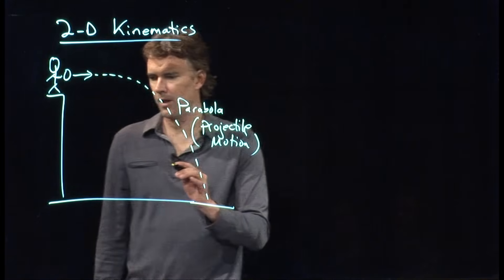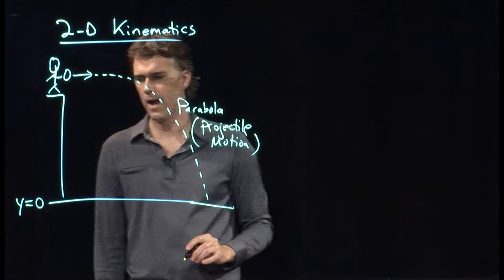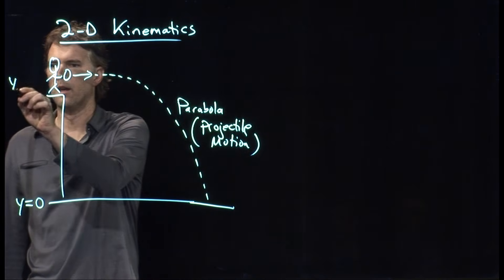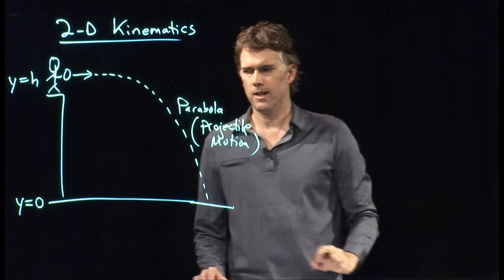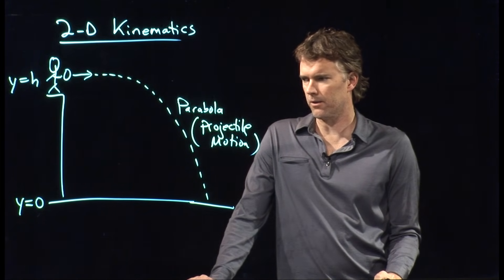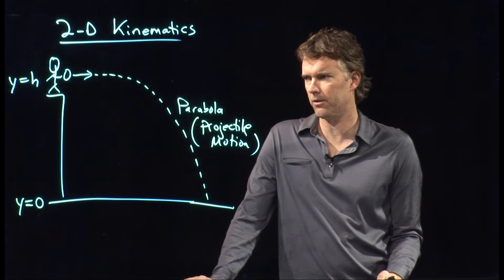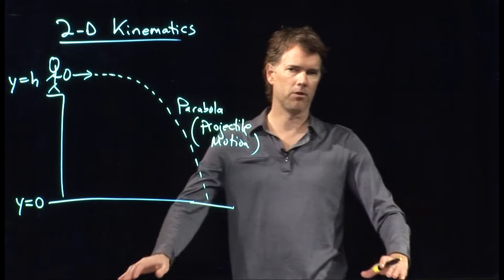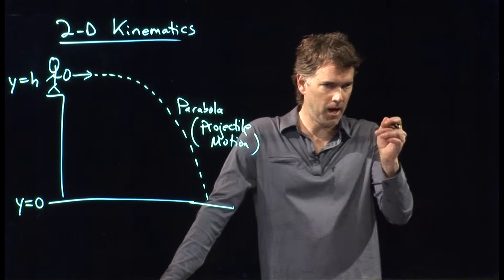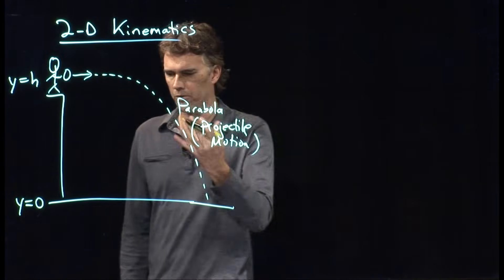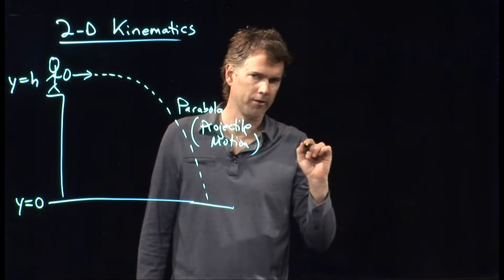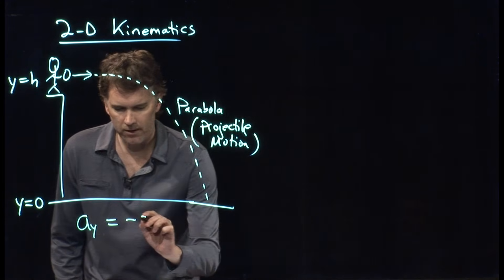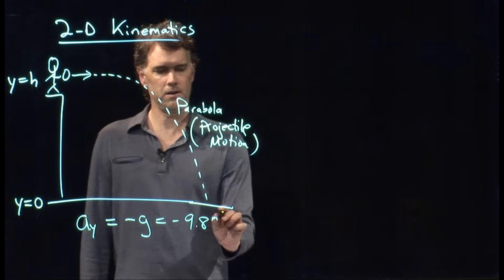It would be nice to understand this problem. First, let's draw a coordinate system. Let's say y equals zero is down here at the ground — you can make that wherever you want, but that seems like a natural starting point. Where we launch the object from, let's say that is y equals h. Now, why is it curving down? What is dragging this thing down towards the Earth? Gravity. Gravity is pulling it down towards the Earth. Without gravity, this thing just keeps going forever. The acceleration due to gravity is negative g, which is negative 9.8 meters per second squared.